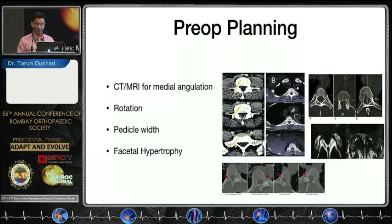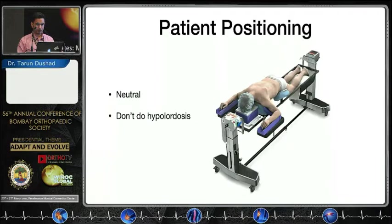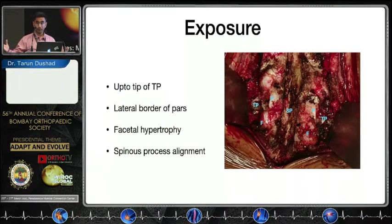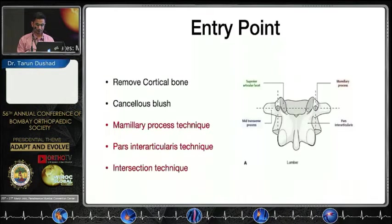Patient position should be neutral — try not to hyperlordose when instrumenting. Regarding exposure: you don't directly see the pedicle from the posterior aspect; you imagine it in relation to posterior structures. Ideally, expose up to the tip of the transverse process. Clearly see the relation between parts, the facet-transverse process connection, and also observe spinous process alignment.